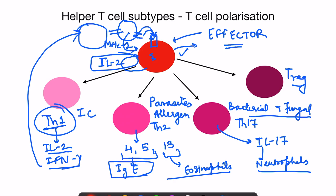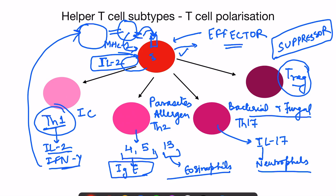T-regulatory cells, also known as suppressor T cells, are a subtype of helper T cells. Apart from effector T cells, some memory T cells also form — these go and reside in various lymph nodes, ready to mount a rapid response if the same antigen attacks in the future.